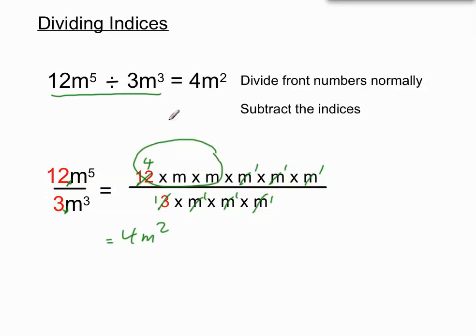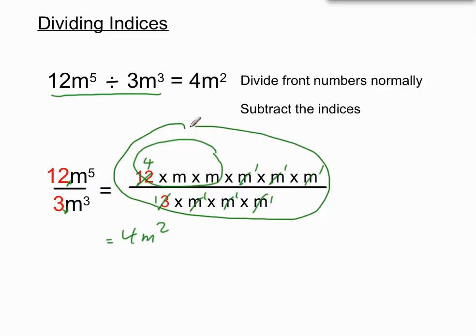So that's just to illustrate that it works, whether you're thinking about it horizontally or writing it out in expanded form — which is a good way of double-checking your answer. I hope that helps you figure out how to divide indices. So far we've had multiplying indices where we add the indices, and dividing indices where we subtract the indices. Those are our two main rules we've seen so far.